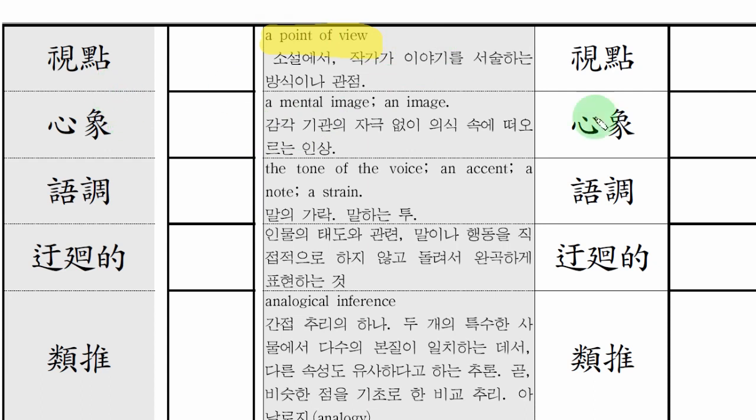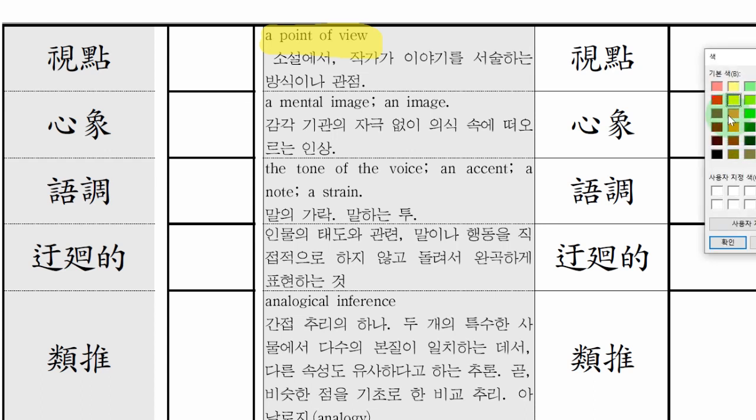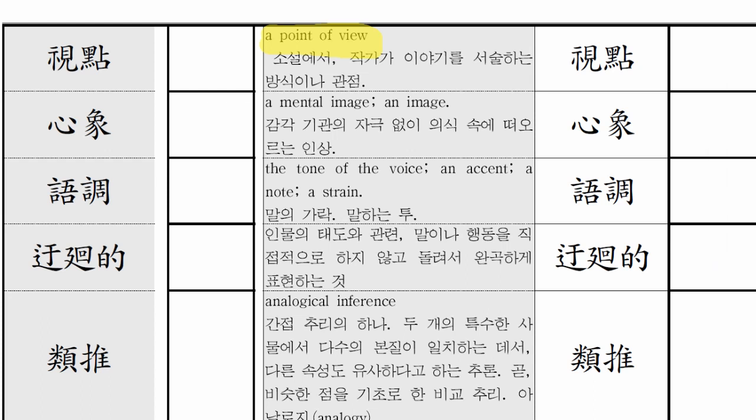시점. 그 다음에 심상. 심상은 뭘까요? 감각기관에 자극 없이 인식 속에 떠오르는 인상. 심상이라는 것은 마음속에 떠오르는 거죠. 상이라는 건 상이니까. 영어 단어는 어떻게 읽을까? 주은이? 어 멘탈 이미지.